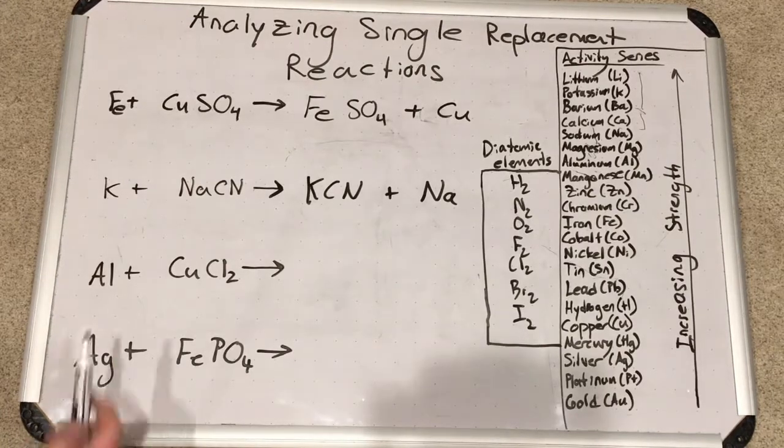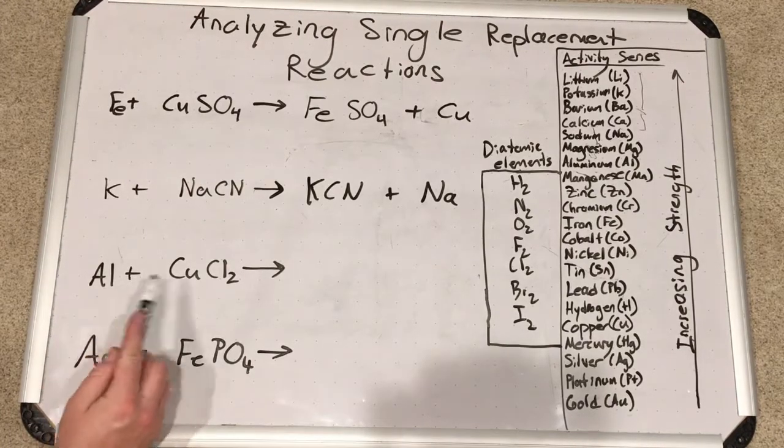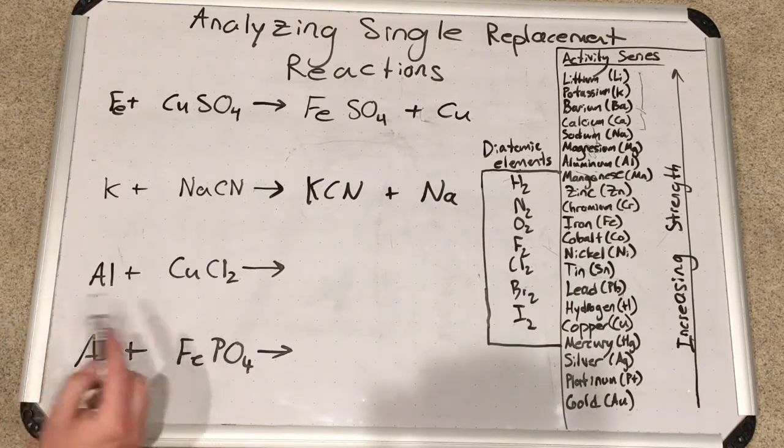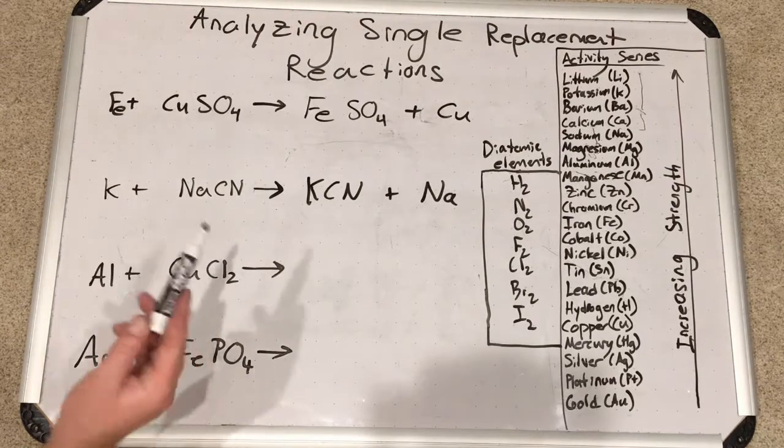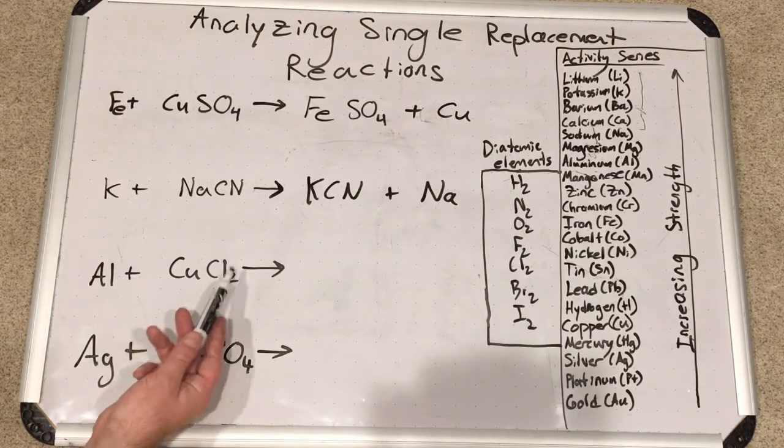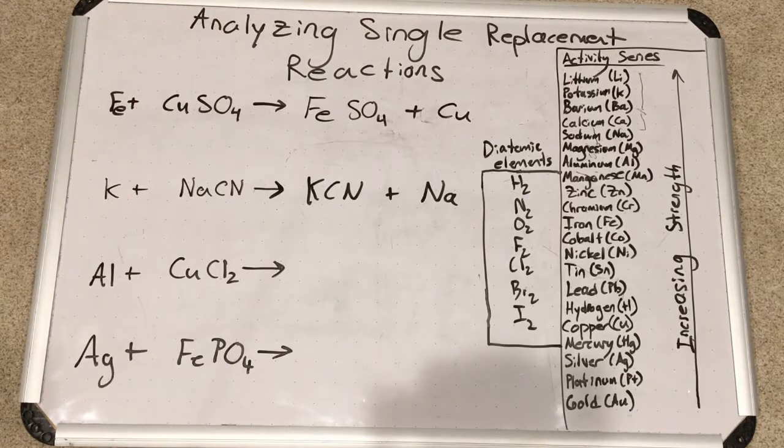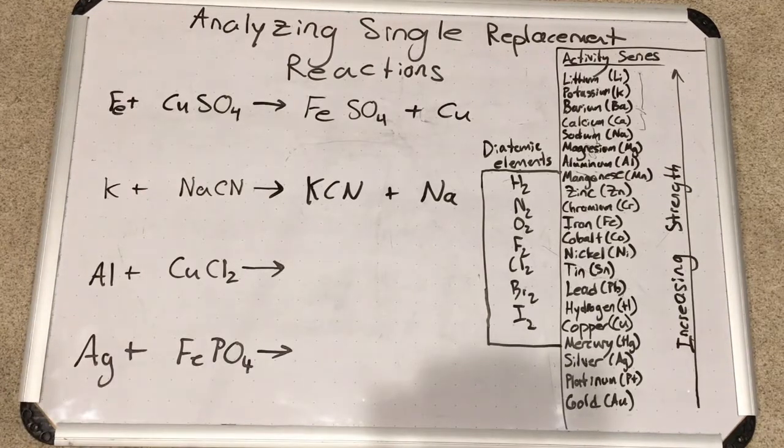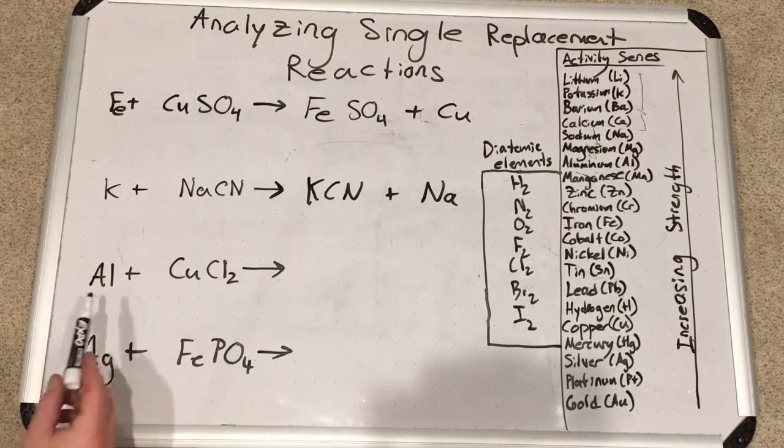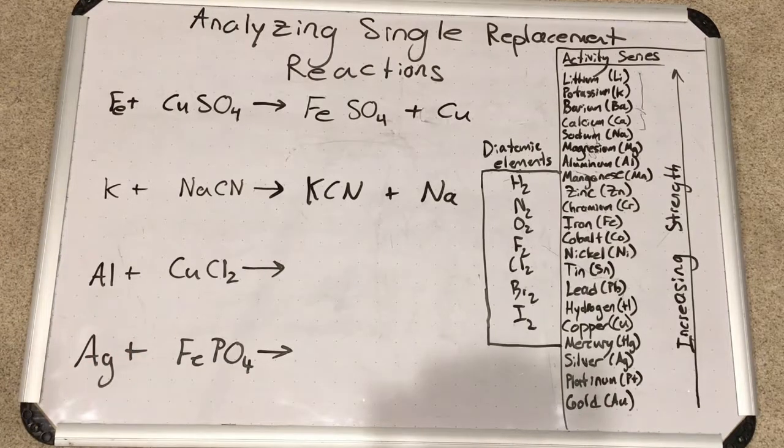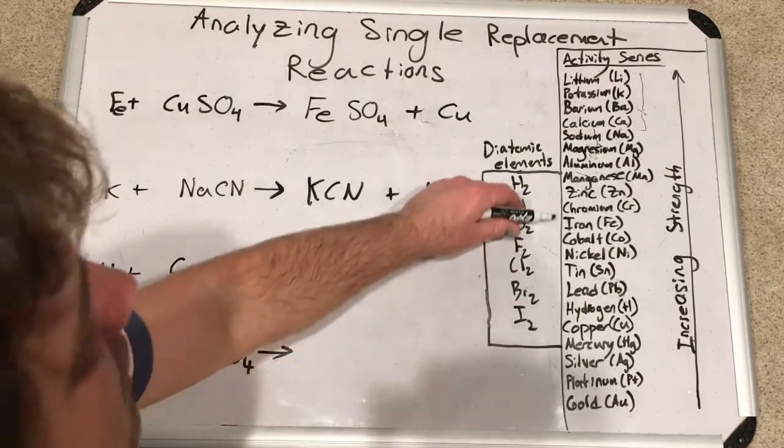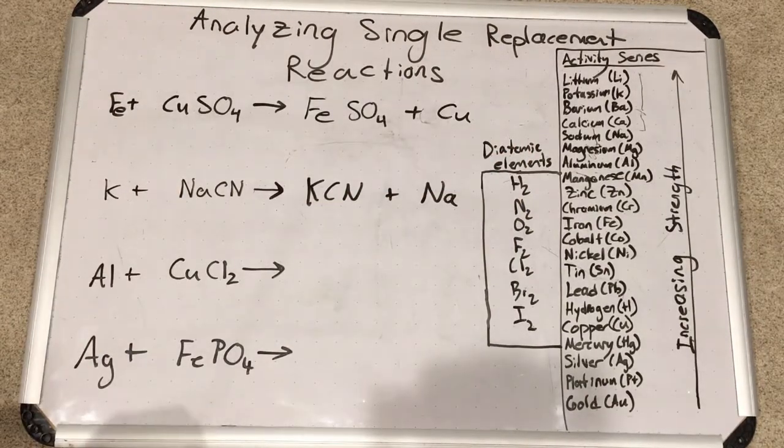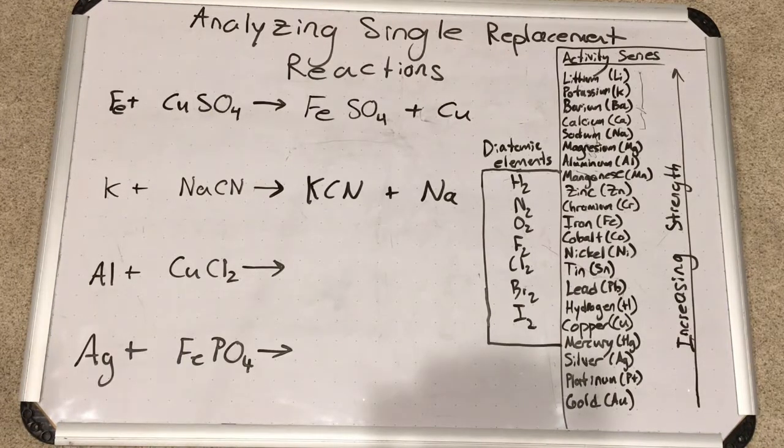Now, this next one, we've got aluminum, elemental aluminum plus copper chloride. Uh-oh, copper is a multi-oxidation number transition metal. So this is copper two chloride. How do I know? Because this is CuCl₂. Each chlorine ion, chloride ion excuse me, is minus one. And so copper has to be plus two since there's two of these. All right, will this reaction occur? Is aluminum higher up on the activity series than copper? Here's copper way down here, and you have to go pretty far up to get to aluminum. It's the highest non-group one, two element on the activity series. So yes, this will occur as well.